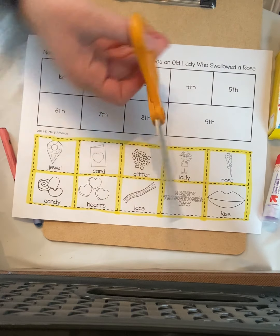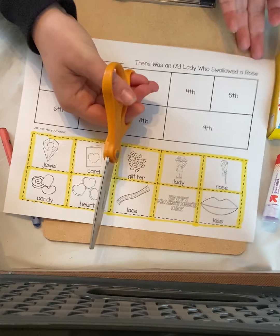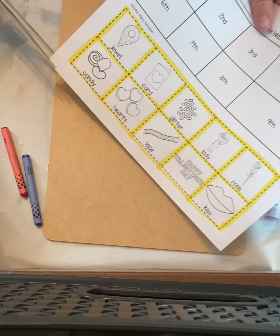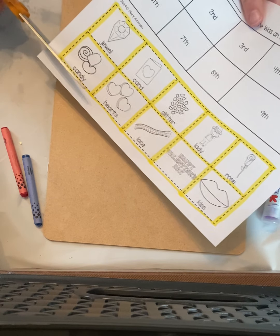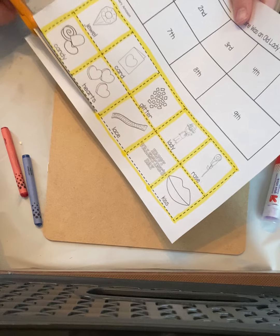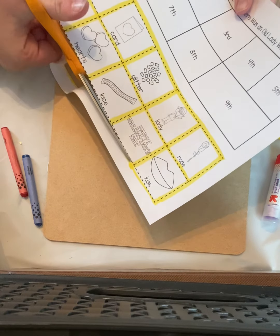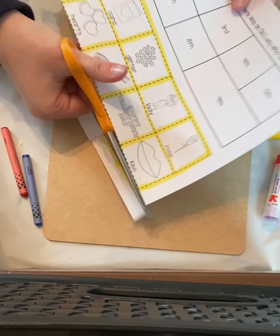First thing, when we use scissors, remember our thumbs on top and fingers are on the bottom and we use our helping hand and we cut away from us. So we can cut, cut, cut. Keep cutting until we get all of our pieces out.